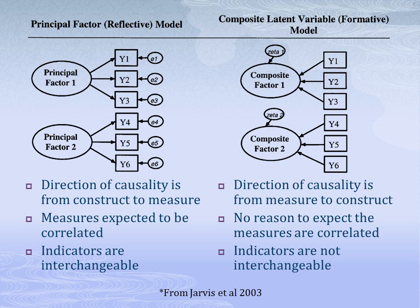The small ovals represent measurement error. There are two different kinds of latent constructs: reflective and formative. For reflective constructs, the direction of causality is from construct to measures, and the group of measures should be correlated and interchangeable, so that if one measure is dropped, the nature of the latent construct does not change. For formative constructs, however, the direction of causality is from the measures to the construct, and the measures don't necessarily correlate, nor are they interchangeable, so that if one is dropped, it does change the nature of the latent construct.